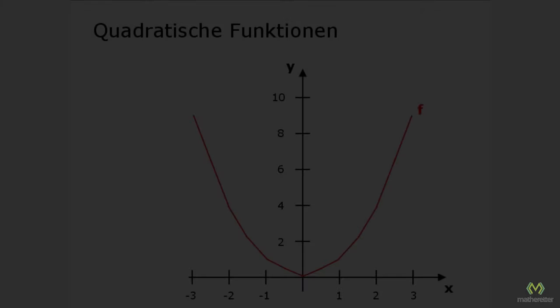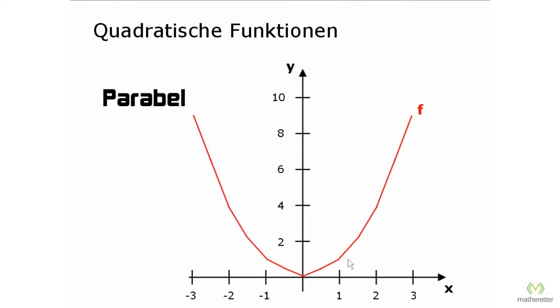The graph of our function is called a parabola. Parabola comes from Greek and means parable or comparison. Of course you can see it, comparing the left side and the right side shows that they are the same. Good, let's examine our parabola a bit more closely. So again, our function equation was f of x equals x squared. What can we do with it?